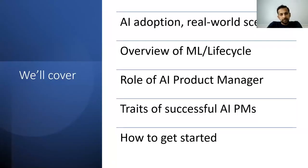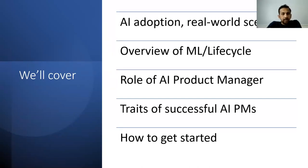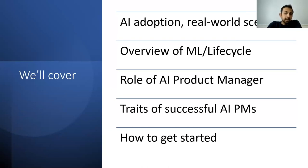So this is what we will cover today. We'll start with AI adoption and how a lot of real-world scenarios are being pushed by AI these days. Then an overview of the ML process, including the end-to-end ML lifecycle. Then we will go over the role of AI product manager and how to be successful in that role. And we will end with giving an overview of how to get started for people who want to get into AI product management.